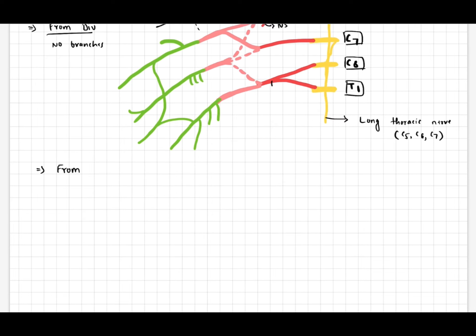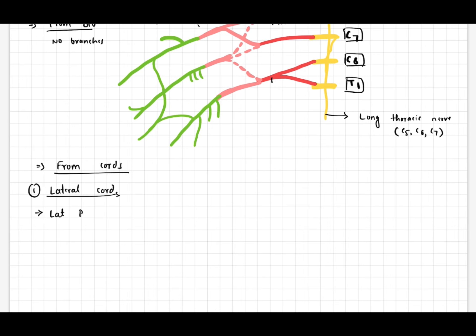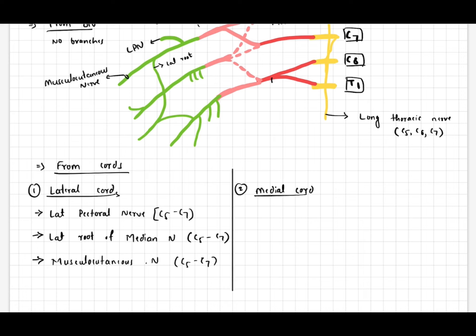From divisions there are no branches. From cords, from lateral cord three branches: lateral pectoral nerve C5, C6, and C7; lateral root of median nerve C5, C6, and C7; musculocutaneous nerve C5, C6, and C7.